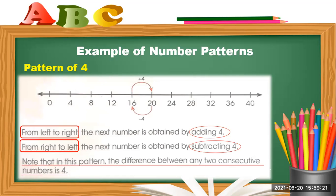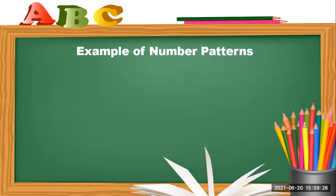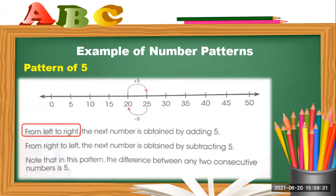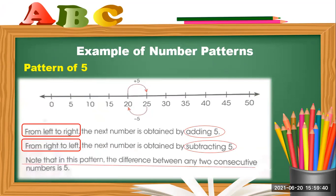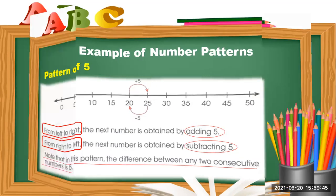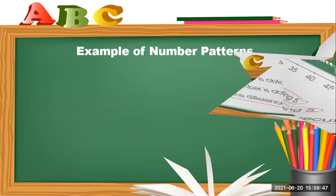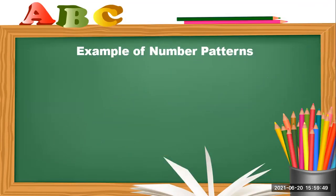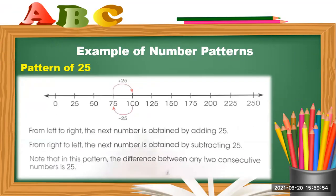And here the next pattern is the pattern of five. From left to right, that is plus 5, and from right to left it is minus 5. The same thing — the difference between consecutive numbers in this pattern is 5.